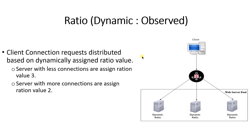In ratio dynamic observed load balancing, client requests are distributed based on a dynamically assigned ratio value. The logic is the same: higher ratio value means the device receives more connections, and lower ratio value means the device receives fewer connections. But this ratio value is assigned dynamically by the load balancer. The admin cannot define the ratio value. The server with fewer connections is assigned ratio value three and the server with more connections is assigned ratio value two, making it a three-to-two ratio.